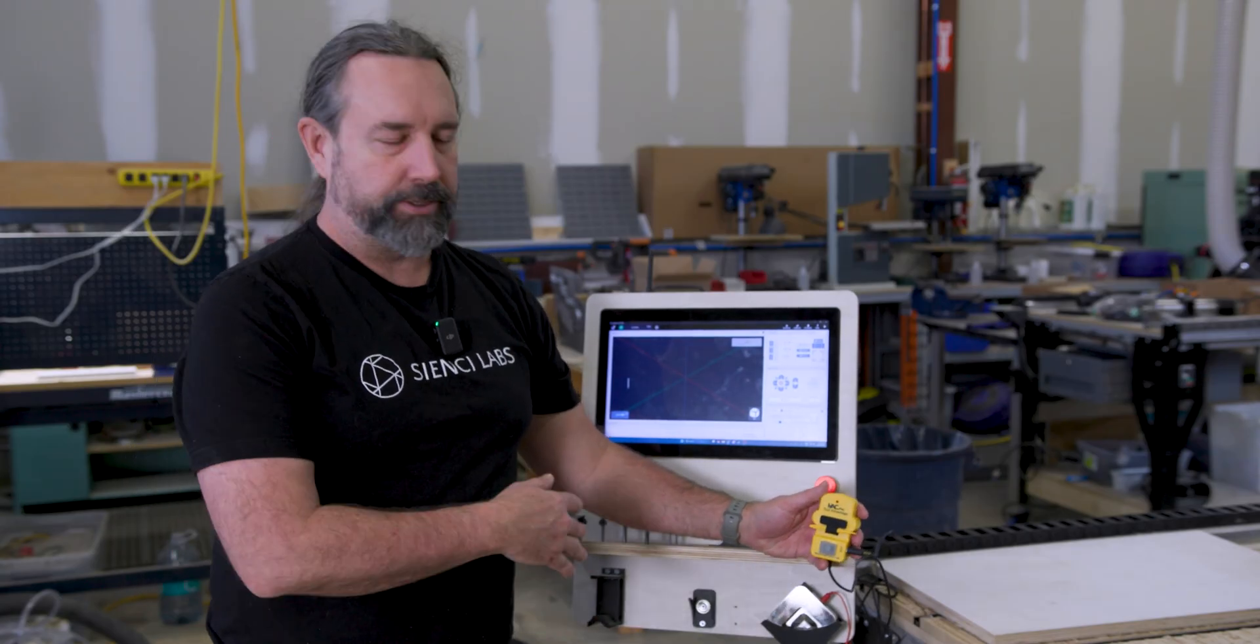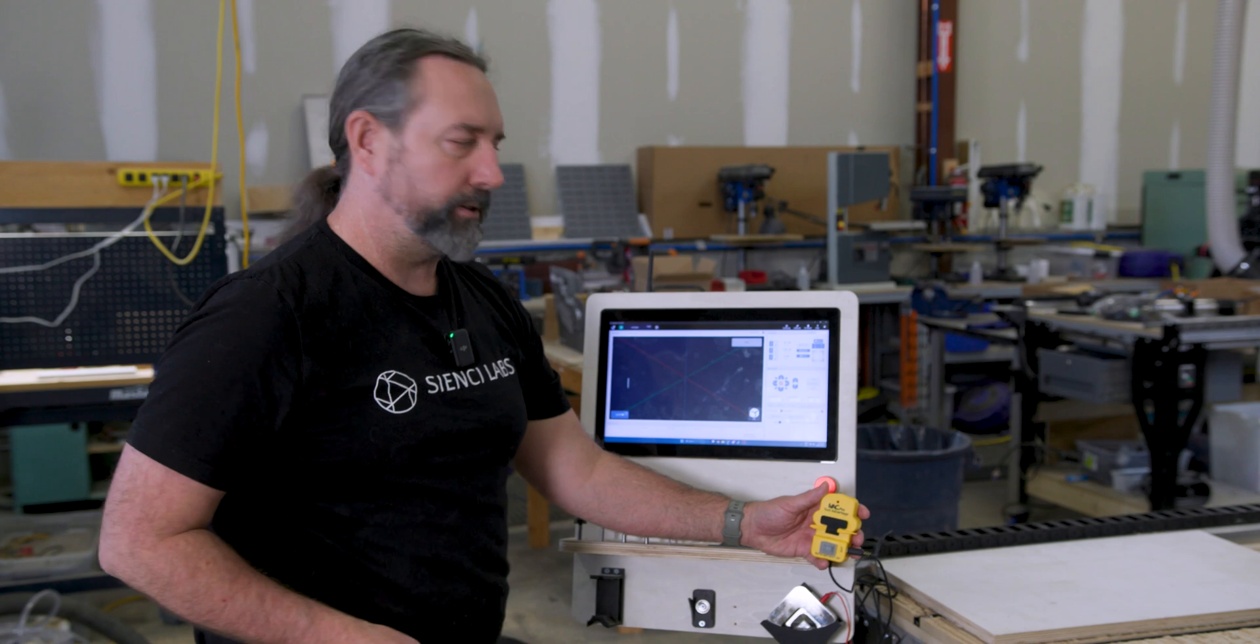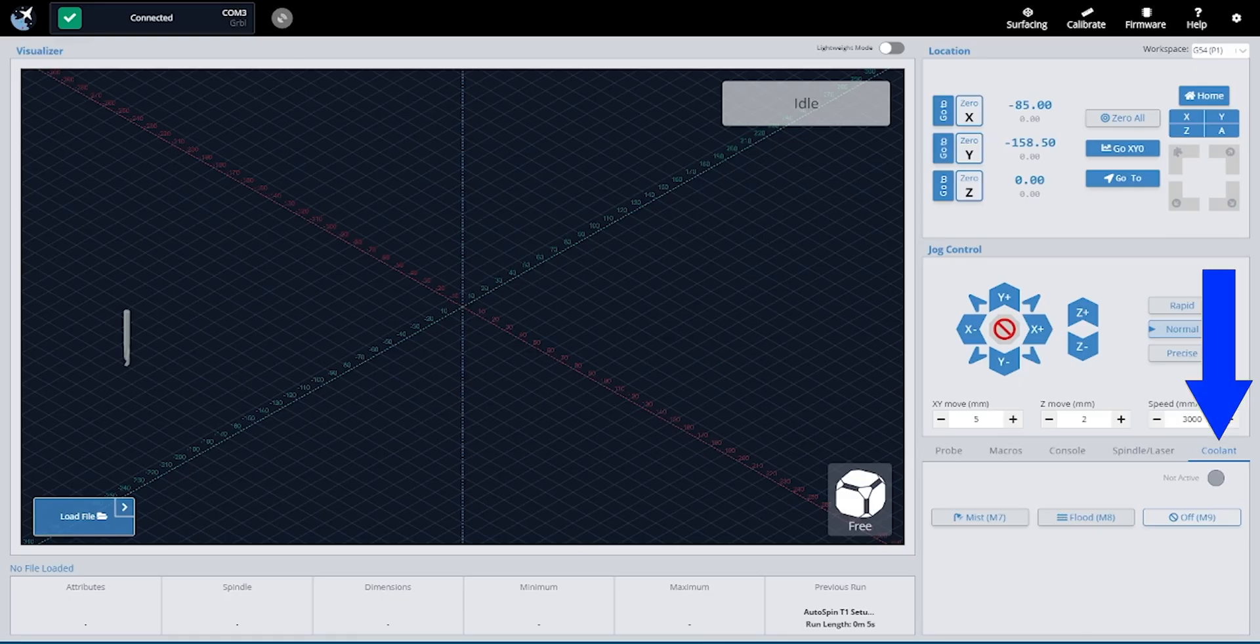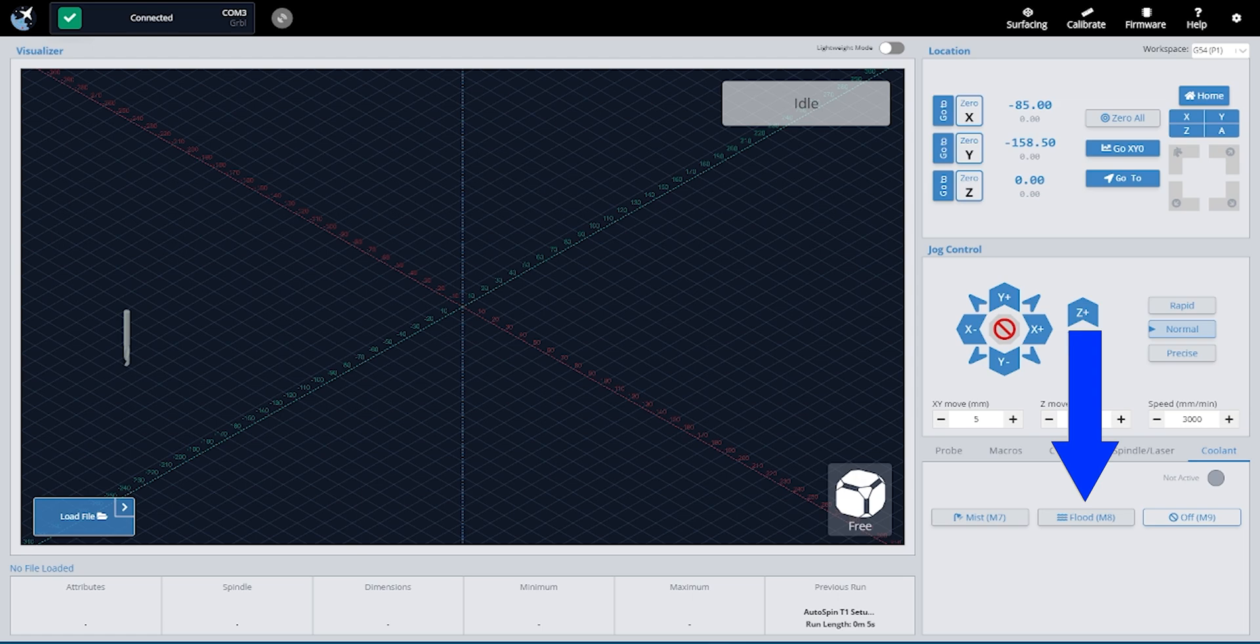So one final thing we want to do is we'll just want to test to make sure it works before we start our job. Head on over to the coolant tab where you've got the commands that we've inputted into start-stop. These are the exact same commands, just in button format. Then just head on over and press your flood.